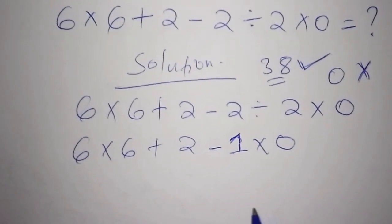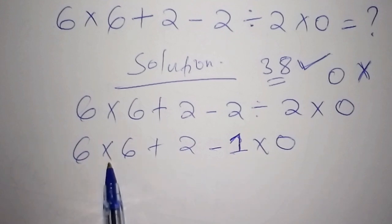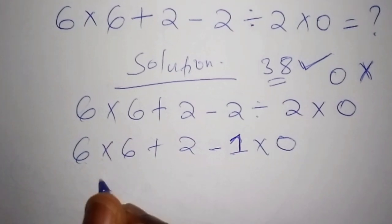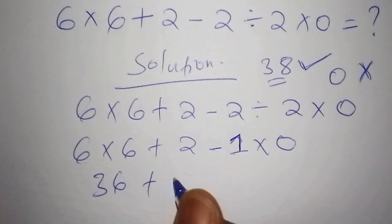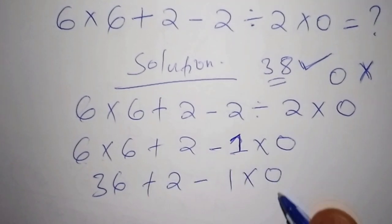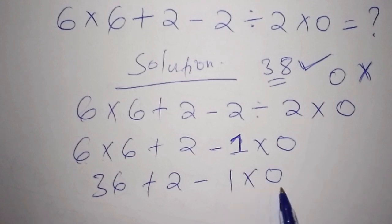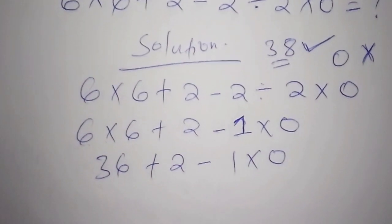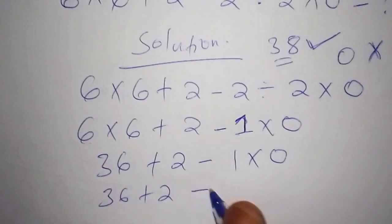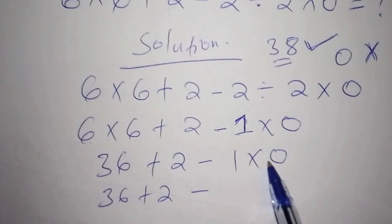Now we move to the next step and work out the multiplication. Here we have six multiply by six, which is 36. So that gives us 36, plus two, minus one multiply by zero. Now targeting this other multiplication: we write six plus two, then minus one times zero.